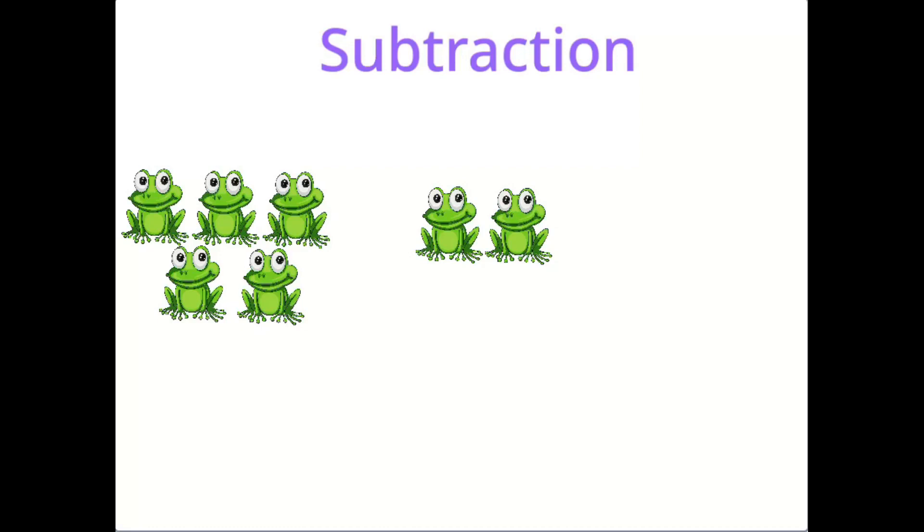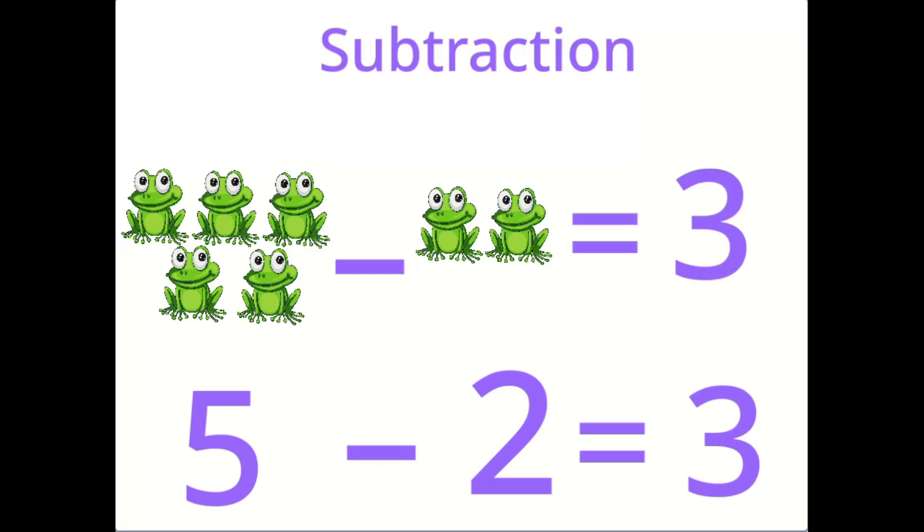Kids, let us do the next exercise. Let us count the number of frogs for the first one: one, two, three, four, five. Let us count the number of frogs for the second one: one, two. Okay kids, now we subtract five minus two. Five minus two is equal to three.